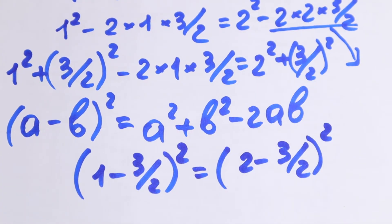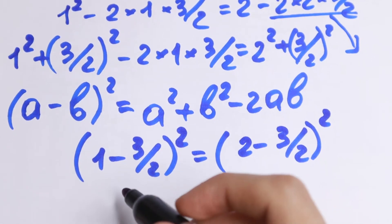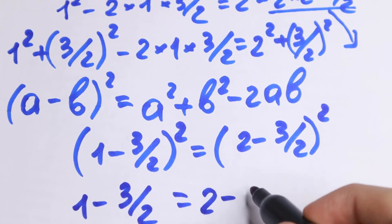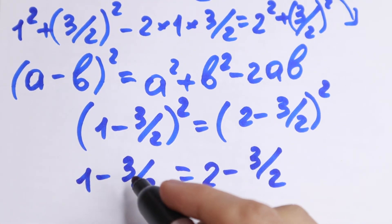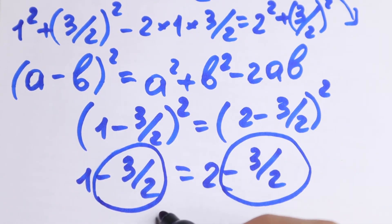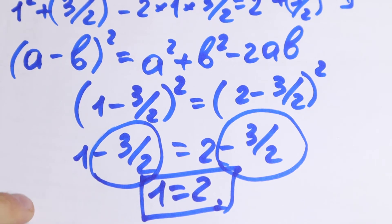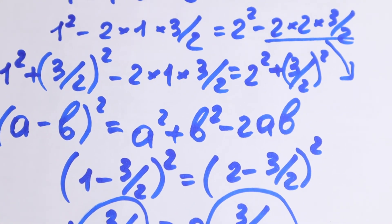What are we going to do next? Taking the square root from both sides. If we take the square root on the left, we will have 1 minus 3/2. And on the right we will have 2 minus 3/2. If we cancel the minus 3/2 on both sides, we will have that 1 equals 2. Where is the mistake? Maybe this is a correct proof, but I will say that right here there is one mistake. I try to show this explanation slowly, so try to catch it and find the mistake.